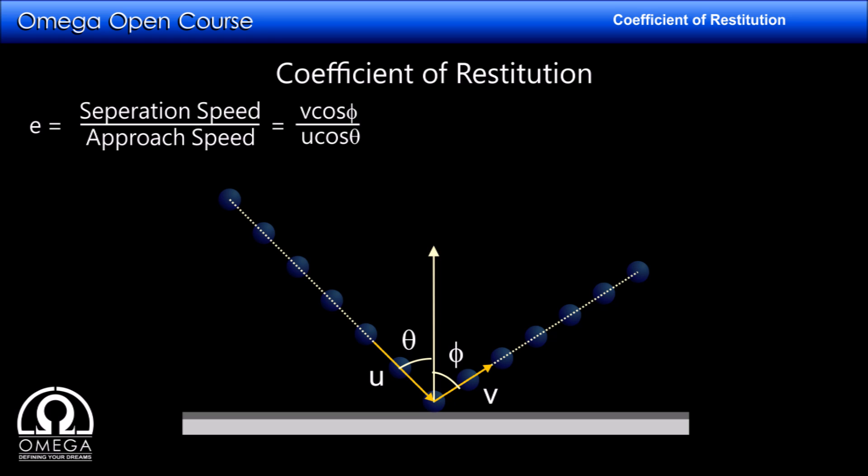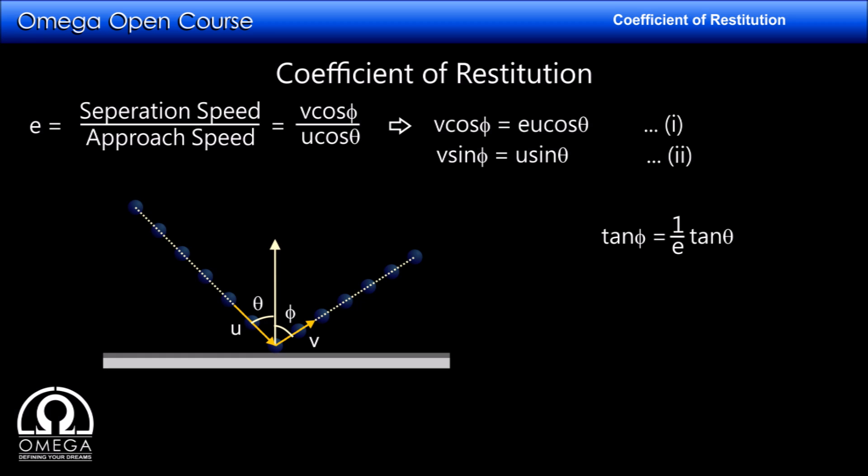Therefore, the coefficient of restitution is v cos phi divided by u cos theta, meaning v cos phi equals e times u cos theta. Since the wall applies force only perpendicular to the surface, the component of velocity along the wall does not change, so v sin phi equals u sin theta. Dividing these two equations gives tan phi equals (1/e) tan theta.